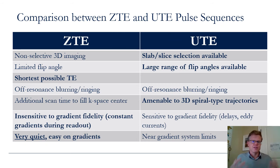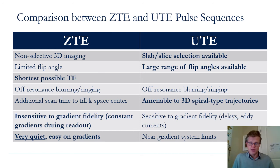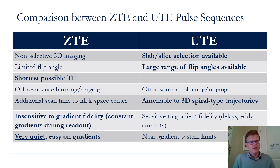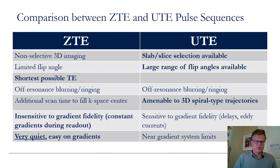Finally, comparing ZTE and UTE — ultra-short TE — pulse sequences, which often come up together: UTE has advantages in that it can do slab or slice selection and is more open-ended in the range of flip angles available. ZTE's advantages are that it provides the shortest possible TE — giving the best short T2* signal — it is very insensitive to gradient fidelity so you don't need to worry about eddy currents or gradient delays, and of course it is silent, which is not true for most UTE sequences.